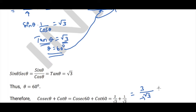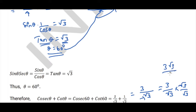To rationalize 3/√3, multiply by √3/√3 to get 3√3/3. The 3s cancel, giving the answer √3.